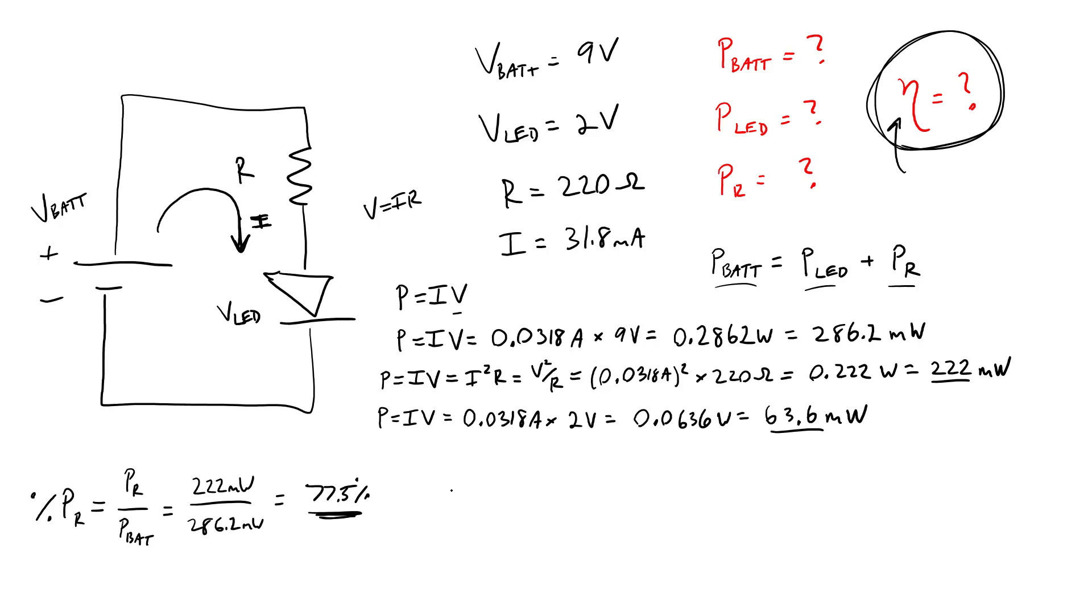As for the overall efficiency of the circuit, eta, we are interested in how much power is delivered to the LED. So we have P LED over power of the battery, but it's important to note that LEDs themselves are not 100% efficient.